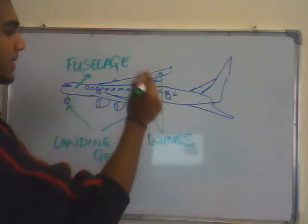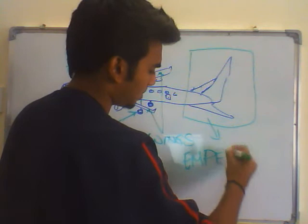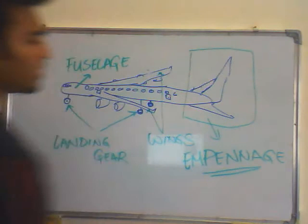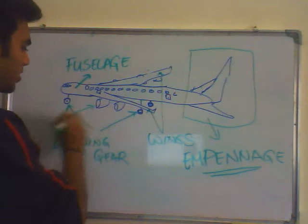This entire section, the entire tail section, is called the empennage. This is probably the only new thing, if you haven't already researched. And the engines are called the power plant.